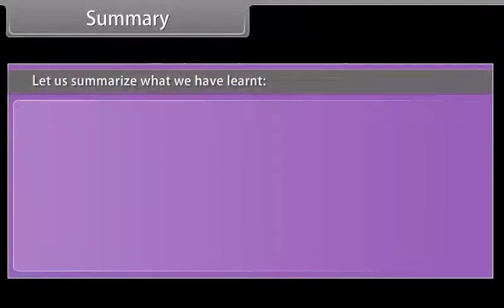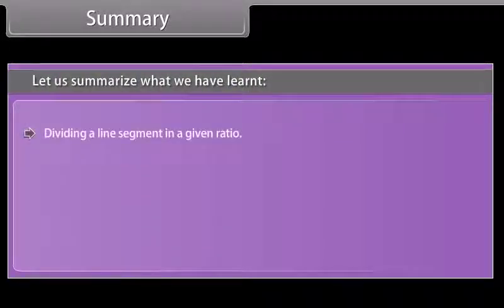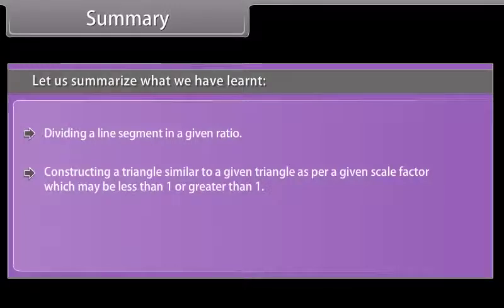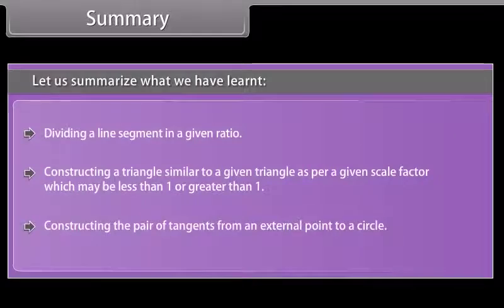Let us summarize what we have learned: dividing a line segment in a given ratio; constructing a triangle similar to a given triangle as per a given scale factor, which may be less than 1 or greater than 1; and constructing the pair of tangents from an external point to a circle.